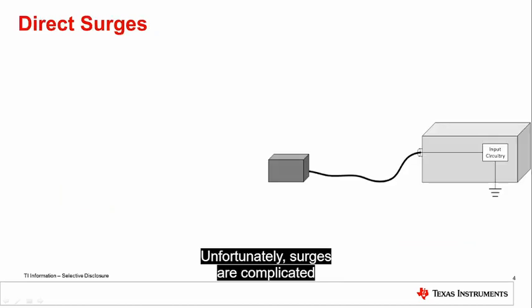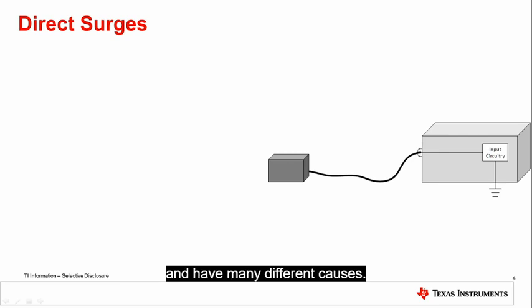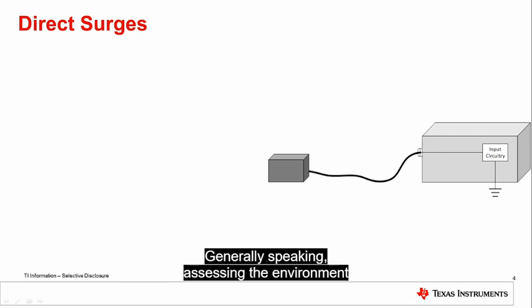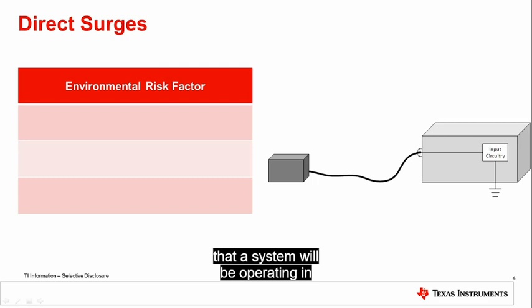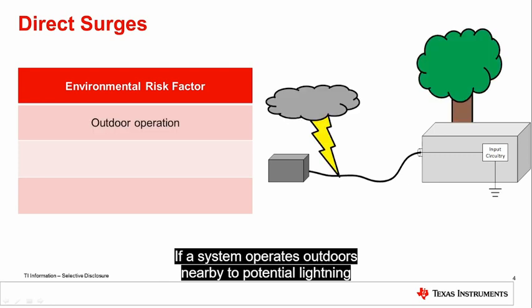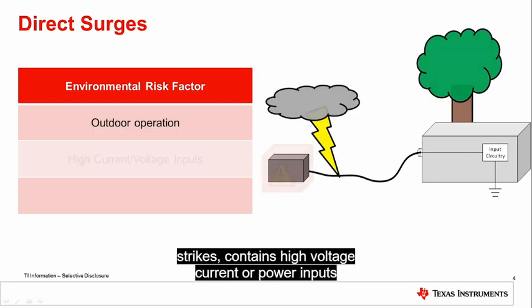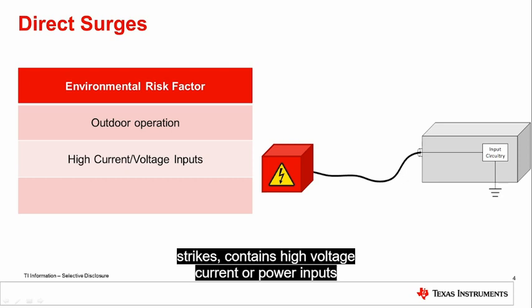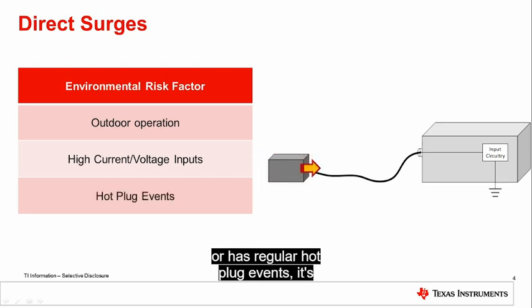Unfortunately, surges are complicated and have many different causes. Generally speaking, assessing the environment that a system will be operating in makes it possible to identify systems at high risk of seeing large surges. If a system operates outdoors nearby to potential lightning strikes, contains high voltage current or power inputs from inductive or capacitive loads, or has regular hot plug events, it's likely that a system will be exposed to surge events and needs to include dedicated surge protection.